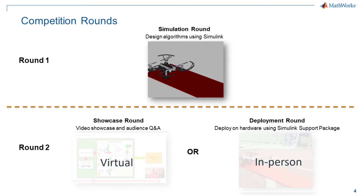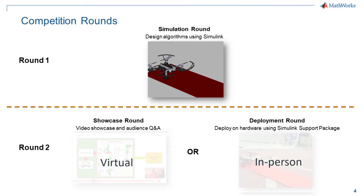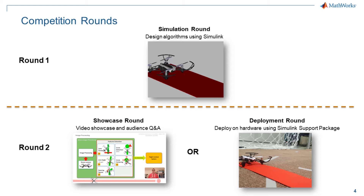The MathWorks Mini Drone competition can be in one of two formats: virtual or in-person. For both formats, the first round of the competition will be a simulation round, where we build an algorithm and test it in simulations using Simulink. The best performing teams from round one will get shortlisted for round two, and the second round would depend on the format of the competition.